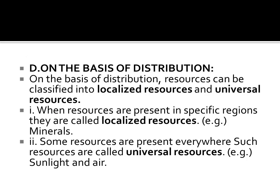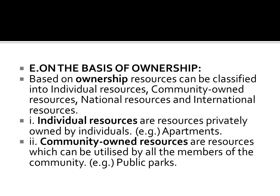On the basis of distribution, resources can be classified into localized resources and universal resources. When resources are present in specific regions, they are called localized resources — for example, minerals. Some resources are present everywhere; such resources are called universal resources — for example, sunlight and air.